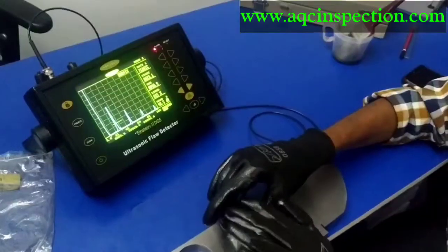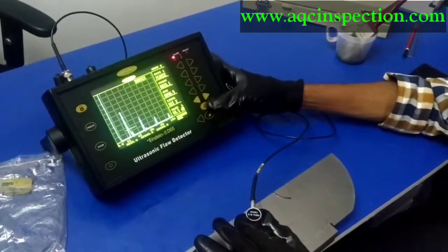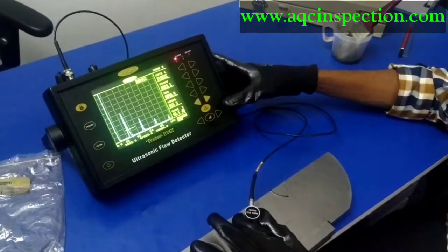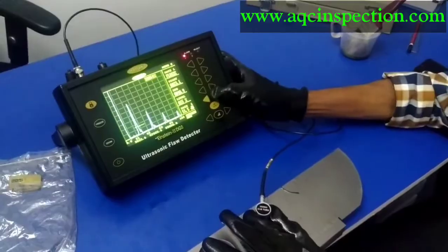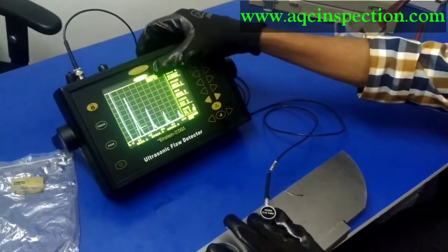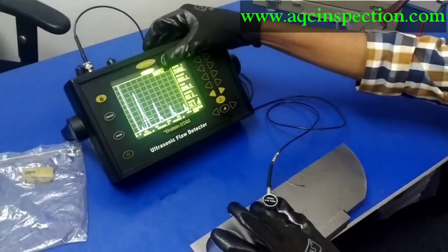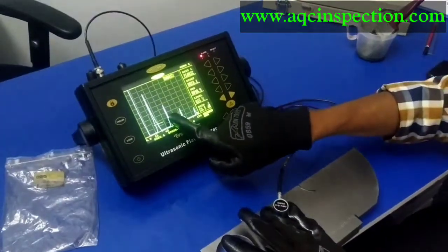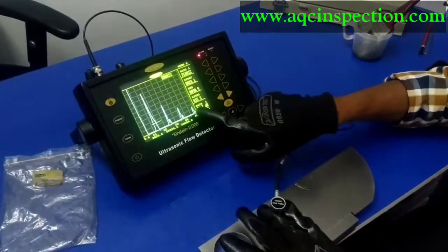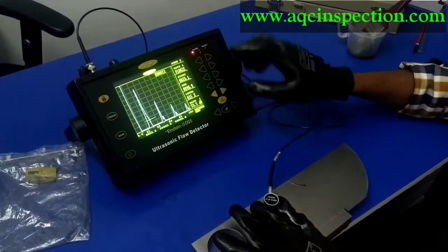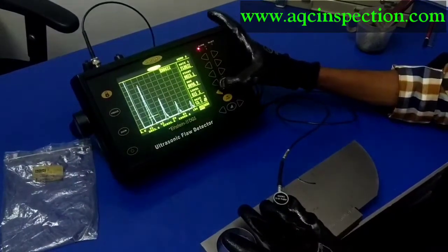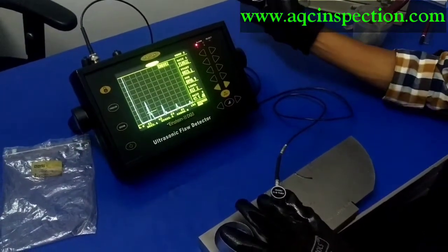Right now I am going to do the calibration for amplitude control linearity which is for checking the gain. Right now I am going to set the first backwall echo to 80% full screen height. As you can see here. The second backwall will be automatically set to 40 and the third one 20 and the last one has 10%. This is the db step. I am going to set as 6db. As you can see. 6db. And decrease once we get 40% height.